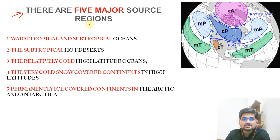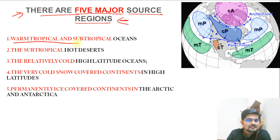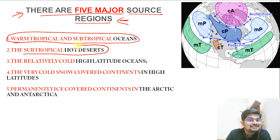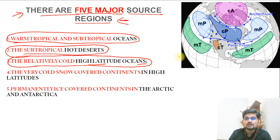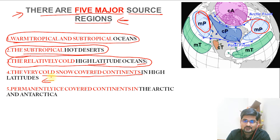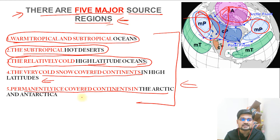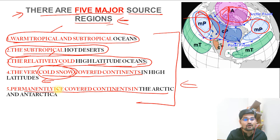There are five major source regions in the world. First, warm tropical and subtropical oceans. Second, subtropical hot deserts. Third, relatively high latitude oceans. Fourth, very cold snow-covered continents in high latitudes. And fifth, permanently ice-covered continents. Essentially, this reflects the variation of solar insolation across latitudes. Every part — either land or ocean — has become a major source region, from warm tropical and subtropical hot desert to relatively colder high latitude oceans or high latitude land areas covered with snow.